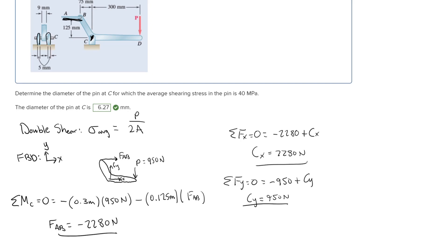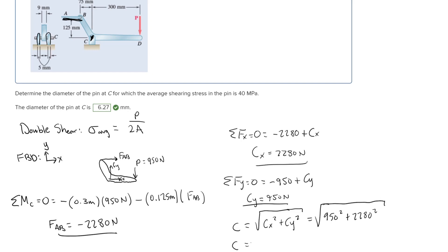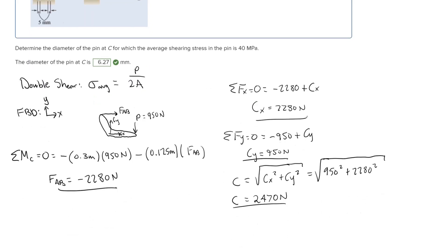We need to find the single resultant force going through pin C. We have the X and Y components, so we take the square root of the sum of each component squared. C equals the square root of CX squared plus CY squared, which is the square root of 2280 squared plus 950 squared. We get C equal to 2470 newtons — this is our total force through the pin.